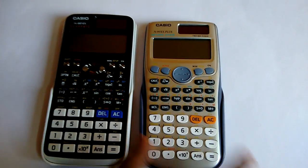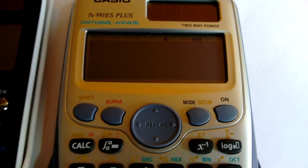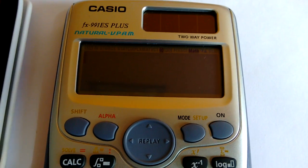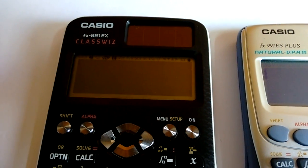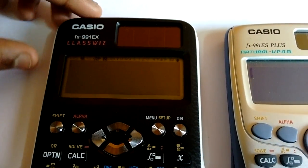The display is also completely different when you use the calculator. Let me show you. As you can see this has a slightly bluish display but on the EX version it's completely normal black dot matrix display.